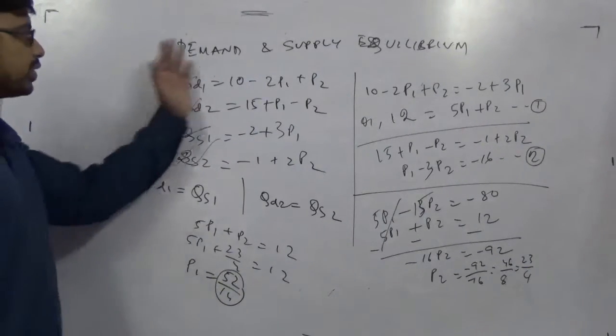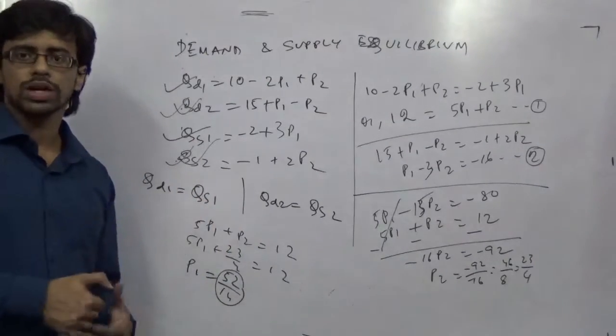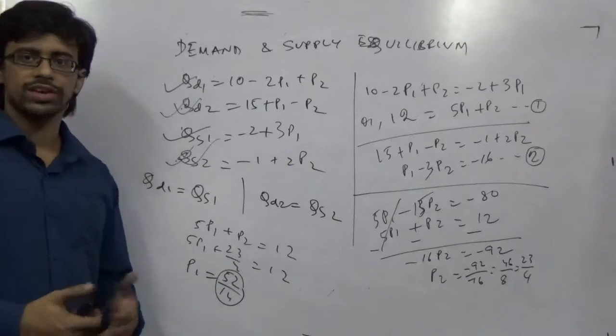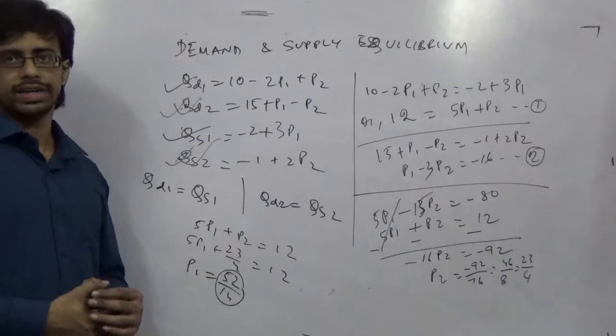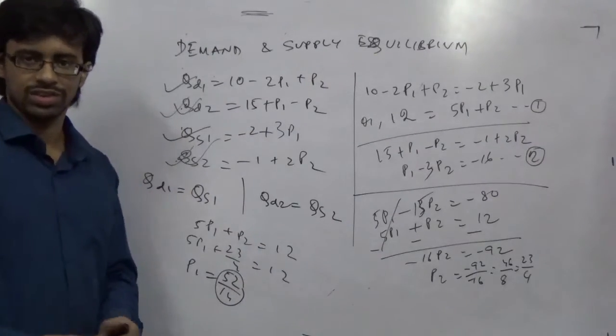This is the format of the demand supply equilibrium for one variable, for two variables and two market, and linear and non-linear cases. Practice all this from books like Chiang, Silberberg, and Henderson Quandt, and you will find it very easy while solving the exam. Thank you.